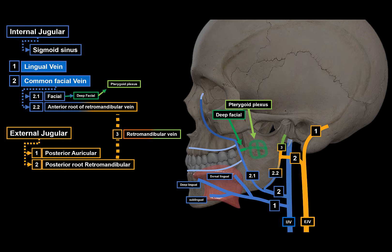If you remember the maxillary artery, the pterygoid plexus is essentially the venous version of the maxillary artery. The pterygoid plexus drains the teeth, the mastication muscles, the parotid gland, the temporomandibular articulation, the nasal cavity, the internal structures of the ear, and so on. It then continues posteriorly as the maxillary vein.